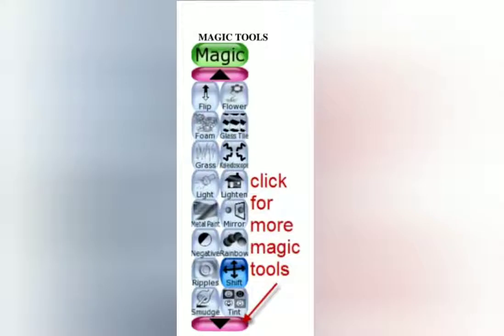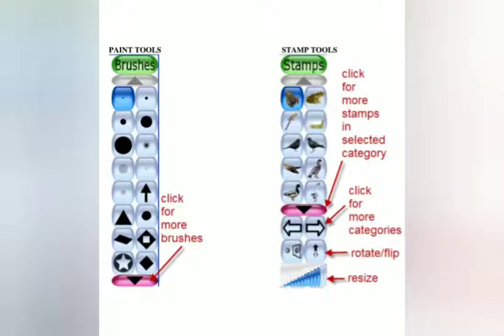You can see different types of brushes here. When you select the Paint tool on the selector, you can see these types of brushes. Next is the Stamp tool — these are the different varieties of the Stamp tool. You can use the arrows at the bottom of the stamp to select more categories. At the bottom of the screen you can see a blue bar — that is our resize tool.